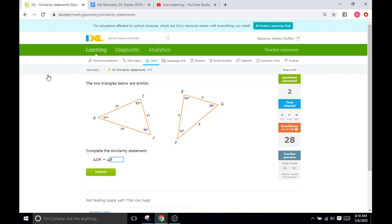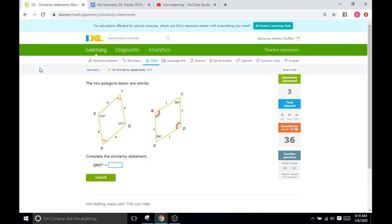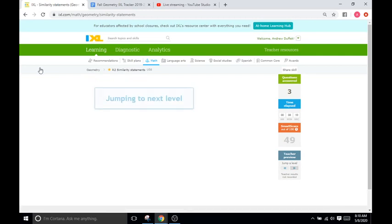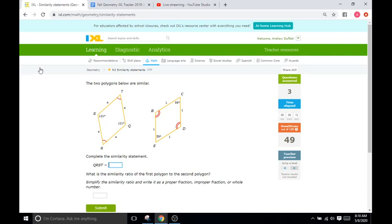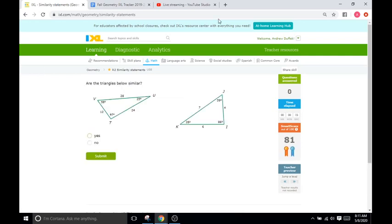J is the 56 degree angle, so G is our 56 degree angle, that's next. K is 41, and F is 41, so that is our similarity statement.